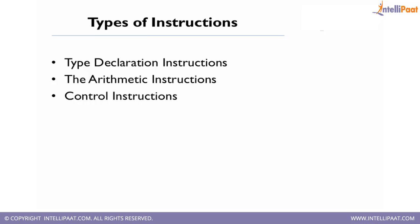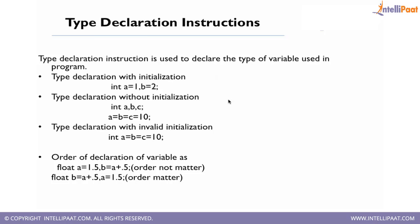Control instructions will be covered in the next session. Let's begin with type declaration instructions. Type declaration instructions are used to declare the type of a variable. For example, declaring an integer variable: int a = 1, b = 2. Type declaration without initialization means we are not initializing the variable — we can initialize variables later at one go, in which case all variables a, b, c will take the value 10.